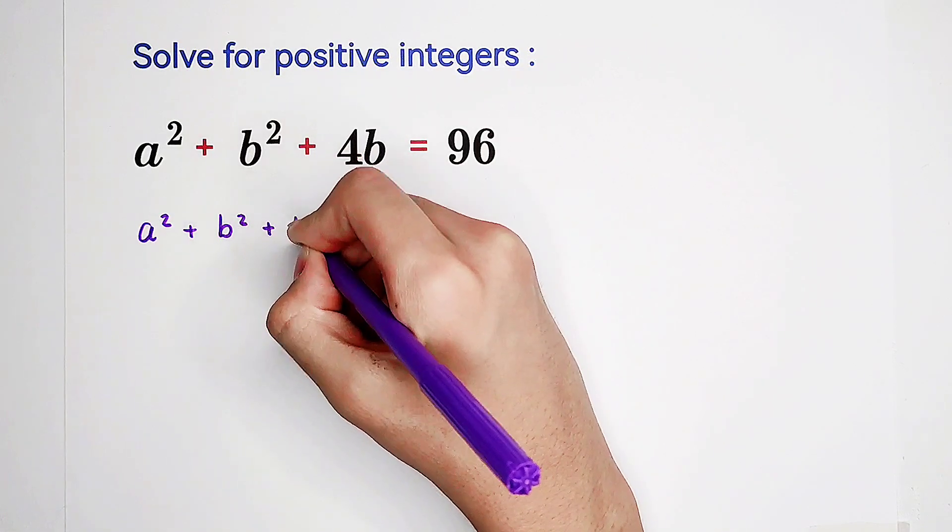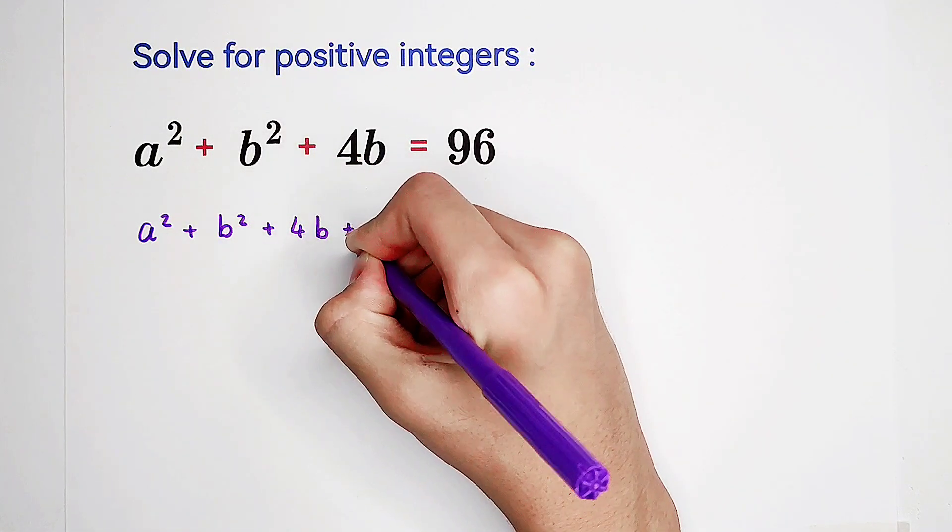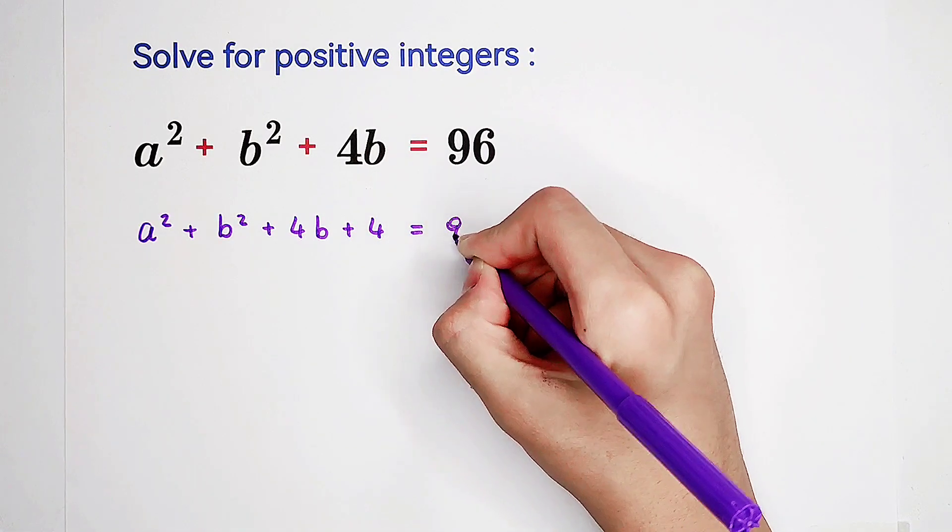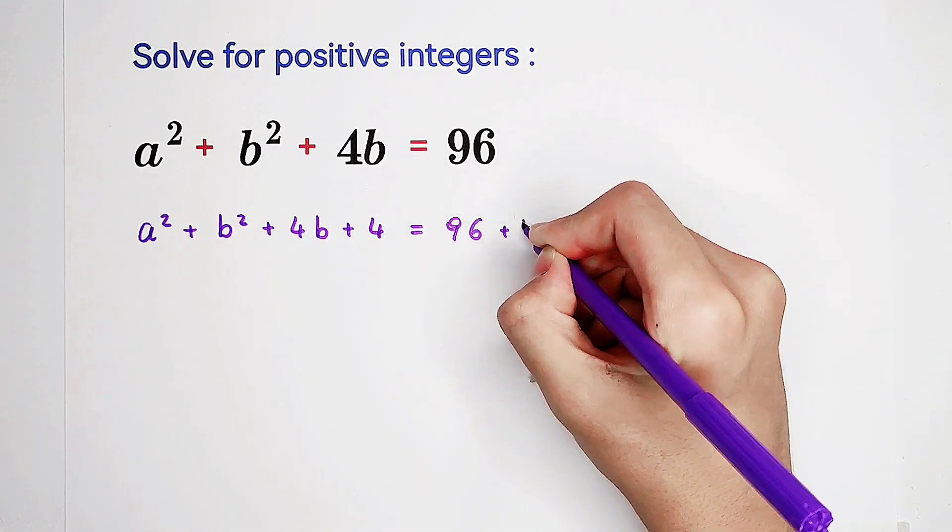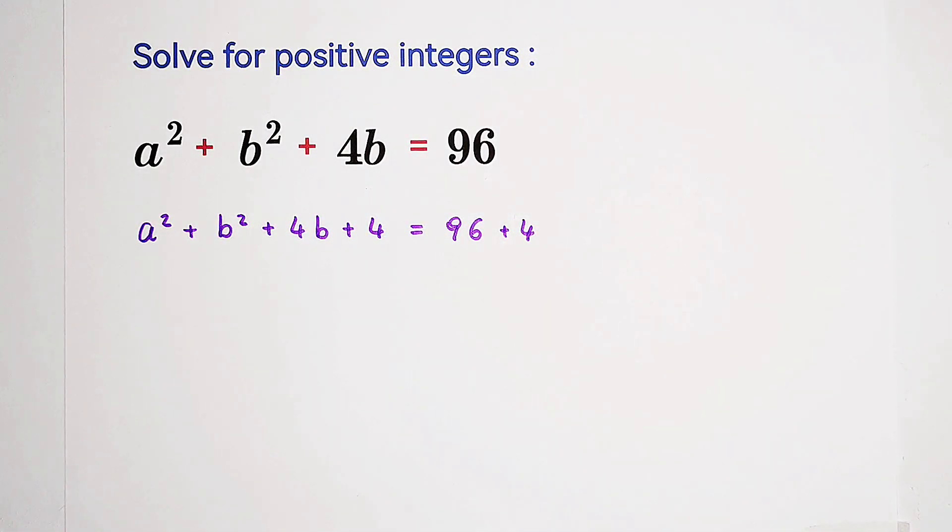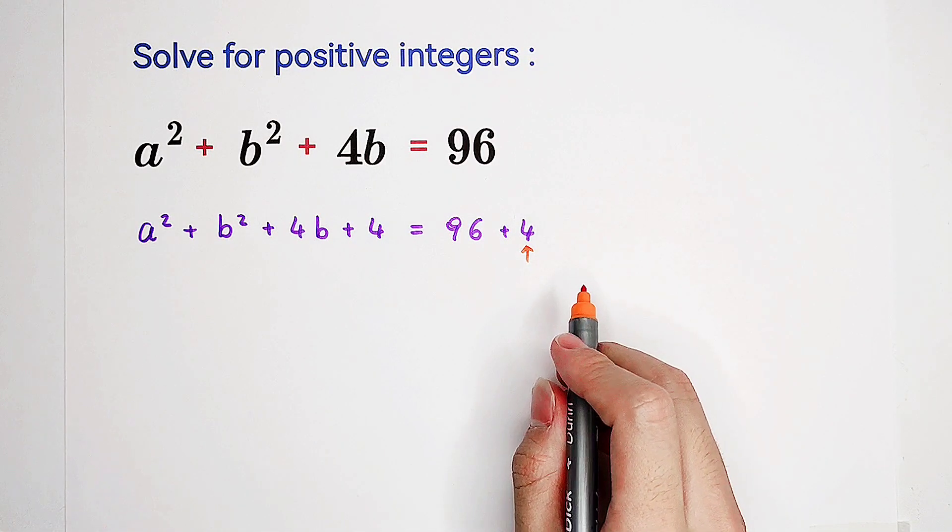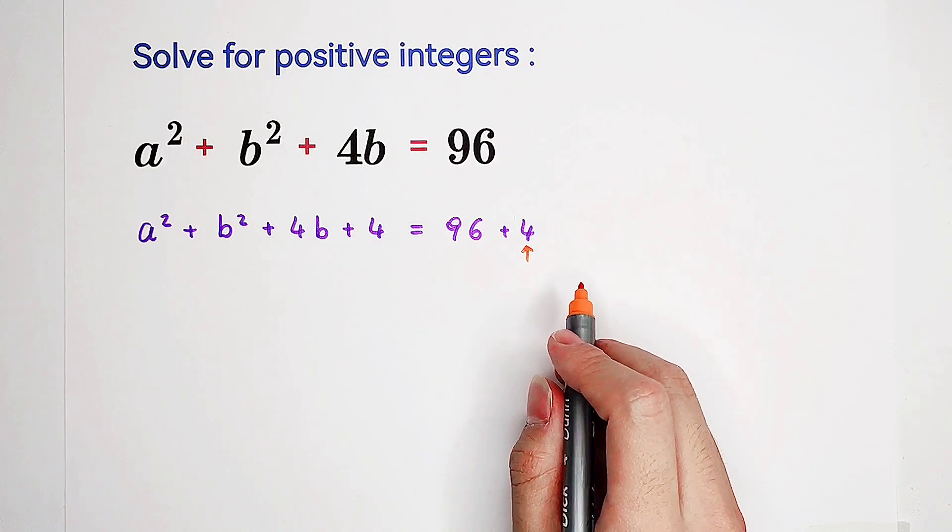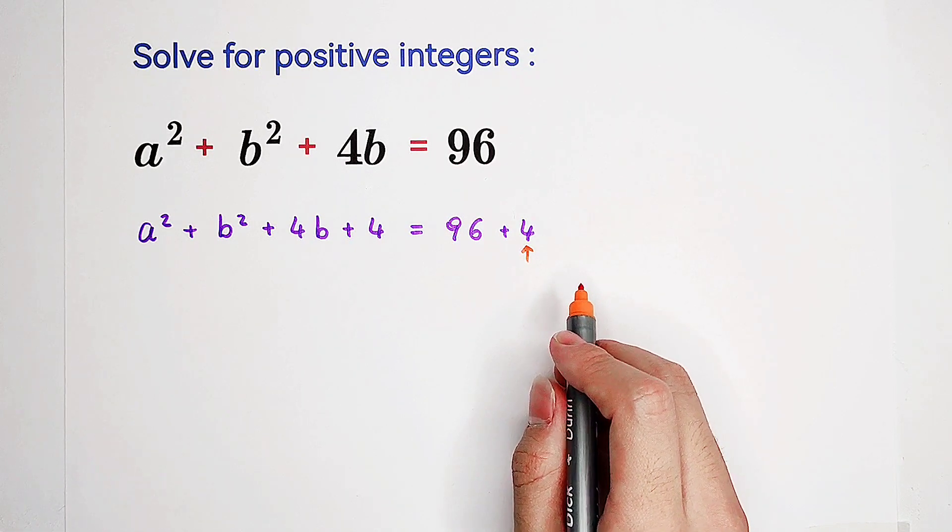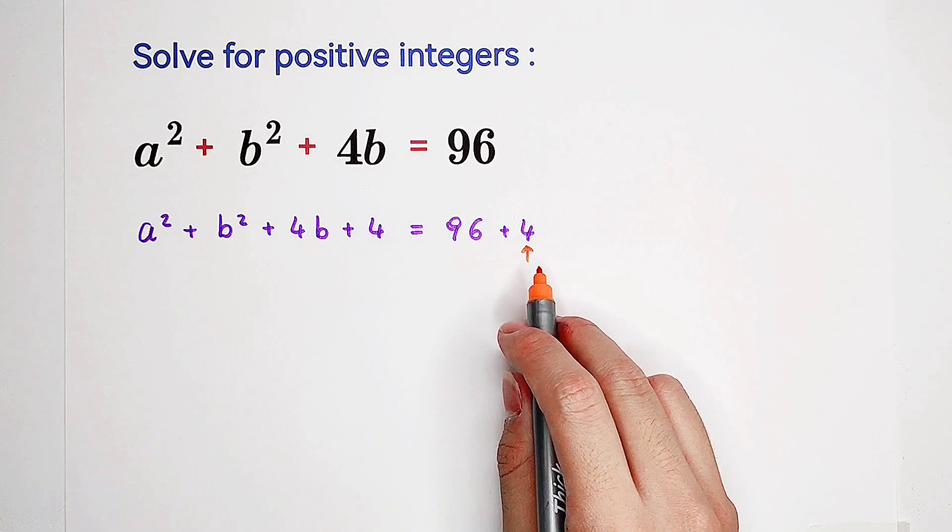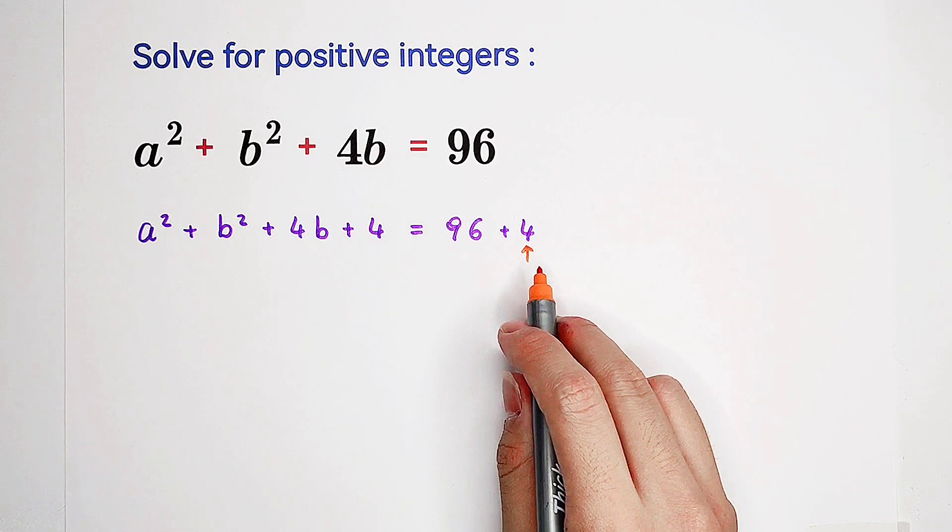If we add 4 on both sides, why have you added a 4 on both sides? Not 3, not 2, not 100. Maybe we're going to say, because 96 plus 4 is 100, is 10 squared. No, that's not the real reason.